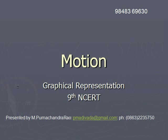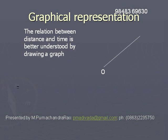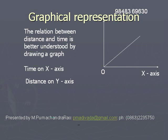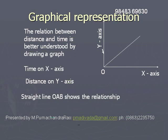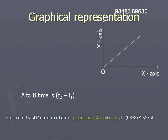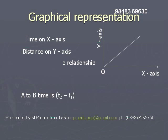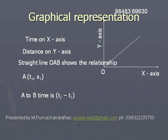Graphical representation of motion. The relation between distance and time is better understood by drawing a graph between time and distance. Generally, time is plotted on the x-axis and distance is plotted on the y-axis. Let us consider the straight line OAB shown in the figure, where A represents time t1 and distance s1, and B represents time t2 and distance s2.